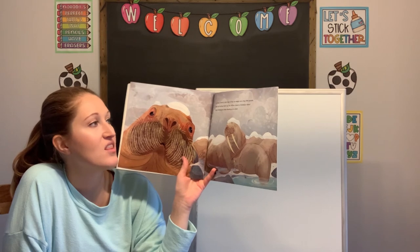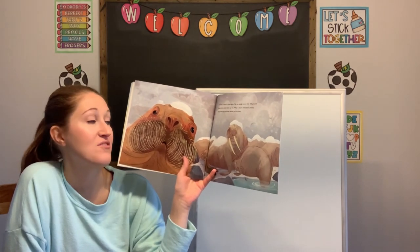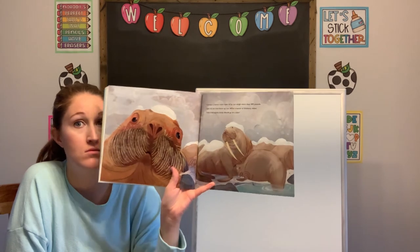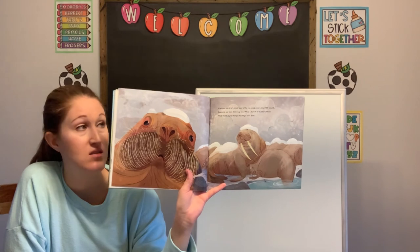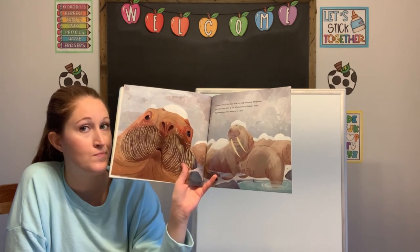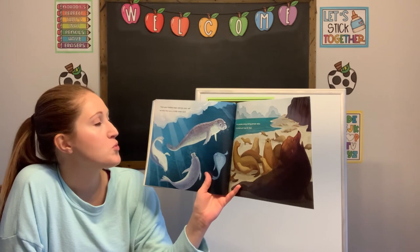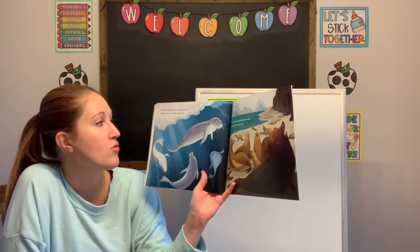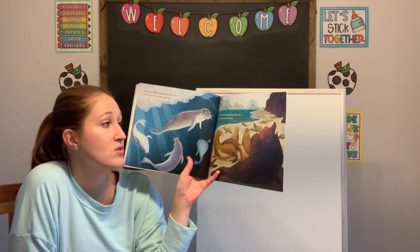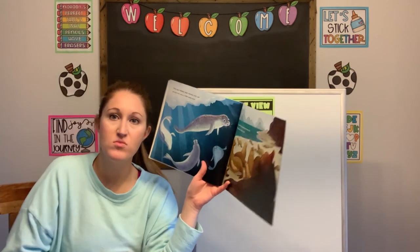In winter, a walrus' thick layer of fat can weigh more than 400 pounds. Seals and sea lions fatten up too — what a bunch of blubbery blobs! Think these plump animals should go on a diet? Think again. Blubber helps walruses, seals, and sea lions stay warm in chilly ocean water. Remember, blubber is that layer of fat. It also provides energy during periods when the animals can't hunt for food — like they brought their own snacks along.